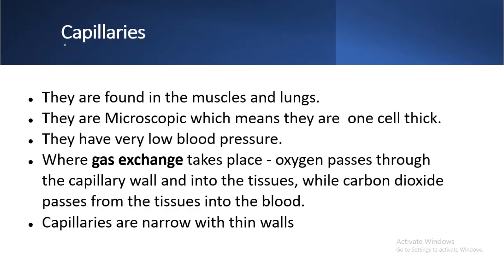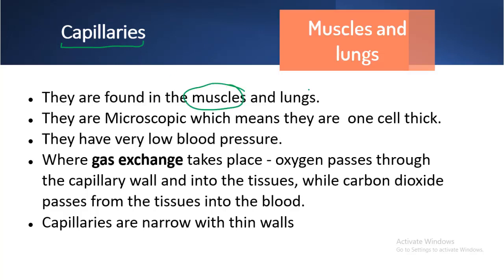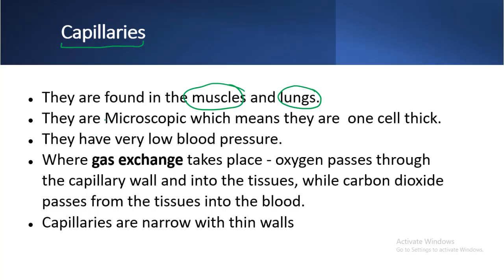Another blood vessel is capillaries, found in the muscles and the lungs. They are microscopic — only one cell thick — and can only be seen under a microscope. They have very low blood pressure. Gas exchange takes place here: oxygen passes through the capillary wall into the tissues, while carbon dioxide and other waste products pass from the tissues into the blood.